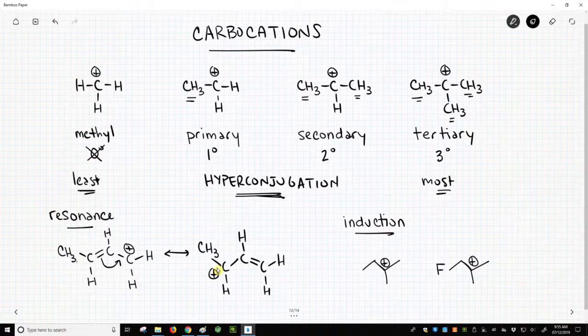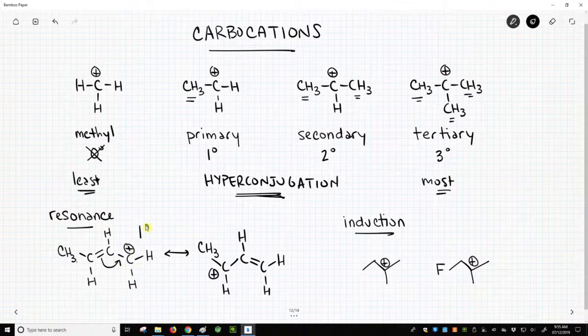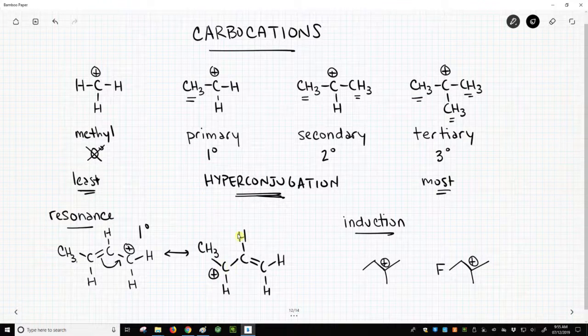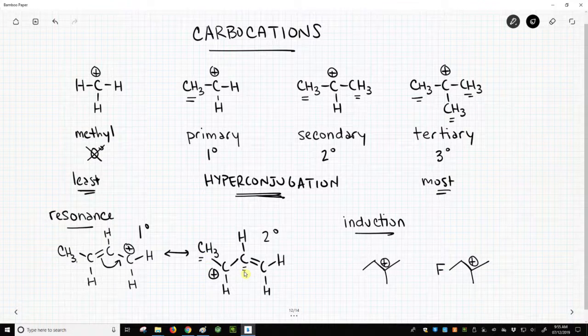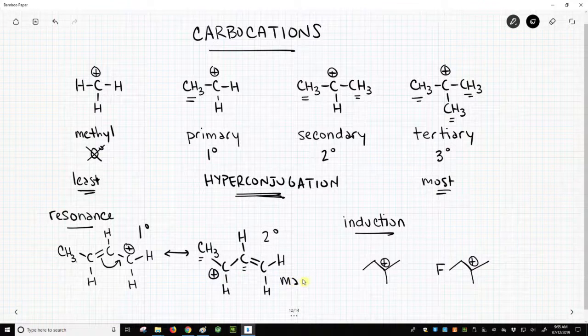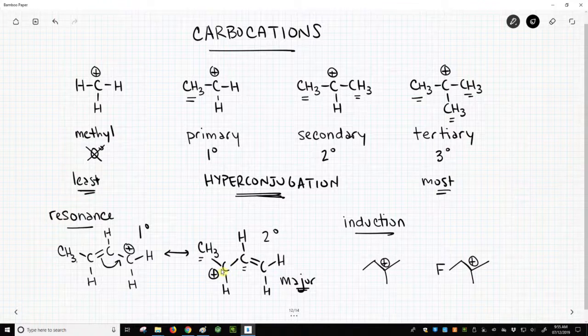Furthermore, we would say, this particular structure, this is a primary carbocation. The structure on the right is a secondary carbocation because this carbon is attached to two other carbons. So when we look at these two resonance forms, we'd say this would be the major contributor in our structure because this resonance form we'd expect would be more stable because it's a secondary carbocation rather than a primary carbocation. So this would be minor.